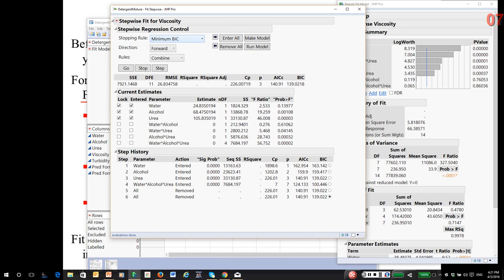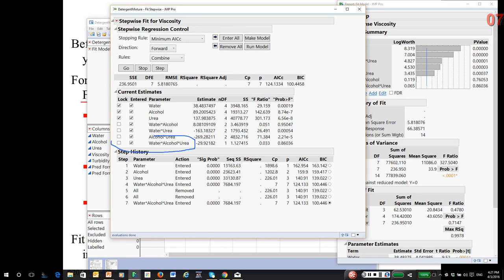This time, I'm going to switch to minimum AIC. So I'm going to take a step. It did the same thing. It went right for that three-way nonlinear blending term and then backfilled with all of the other terms.